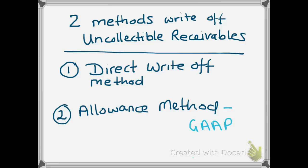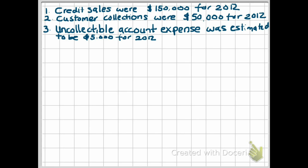Let's take a look at the allowance method to account for uncollectible accounts. Remember, the allowance method is the method that is recommended by GAAP. Whenever companies use the allowance method, what they do is they take their credit sales and estimate how much of those credit sales will be uncollectible. The estimate of uncollectibles is typically based on industry standards or the company's own collection history.